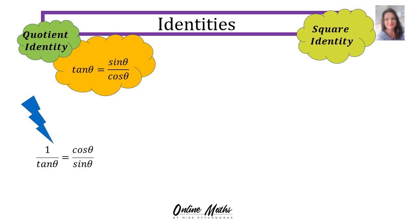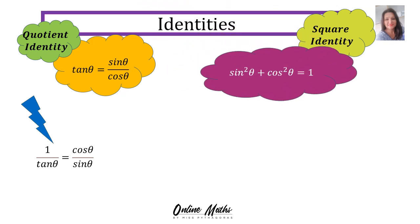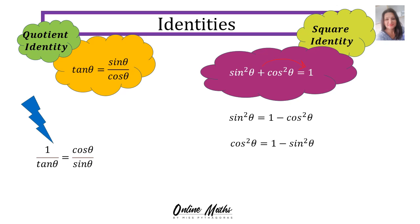On the right-hand side, the square identity: sin squared theta plus cos squared theta is equal to 1. We can also make sin squared theta the subject of the formula, so sin squared theta equals 1 minus cos squared theta. Or we can make cos the subject, so cos squared theta equals 1 minus sin squared theta.